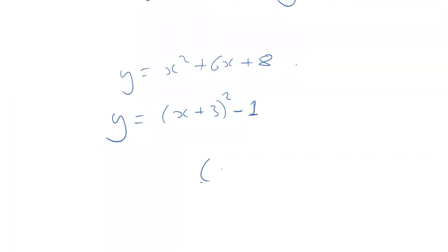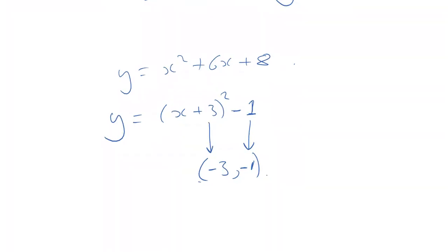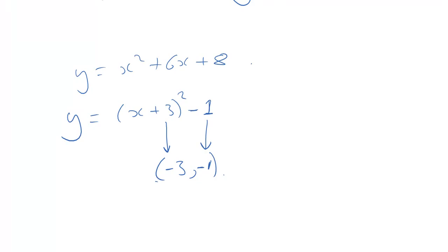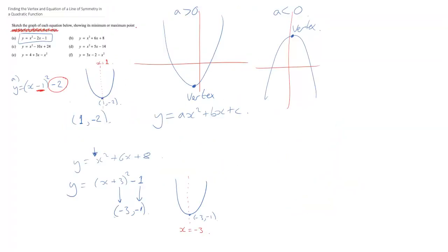My minimum point is going to be negative 3, negative 1, because this value is the y and the opposite of this is the x, where I change that sign. So is it a smiley face or a sad face? It's, of course, a smiley face because I have a positive number in front of the x squared. So if I was going to draw this, it's going to be a smiley face. This is minus 3 minus 1. And if I wanted the equation of that line of symmetry, it's going to be x is equal to minus 3. And that really is it. That's all we have to do.